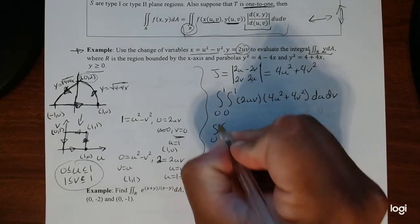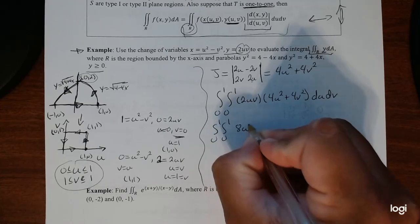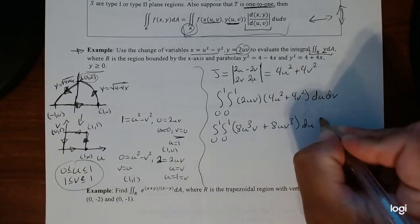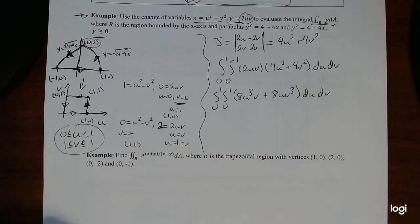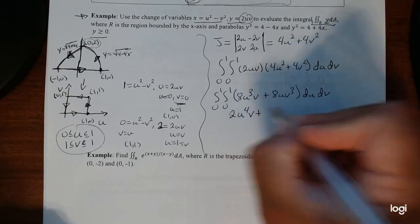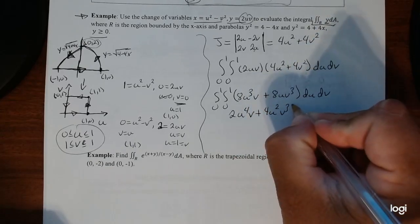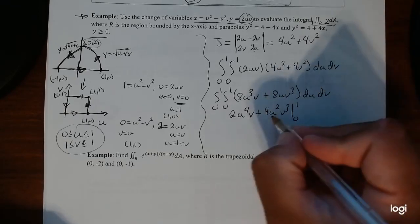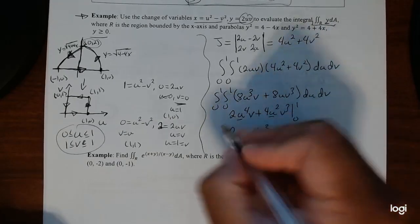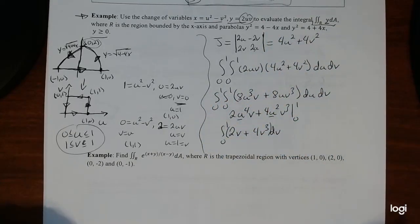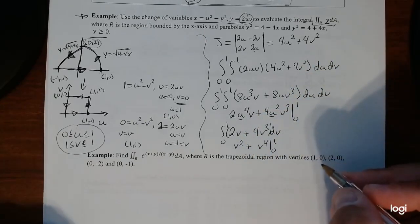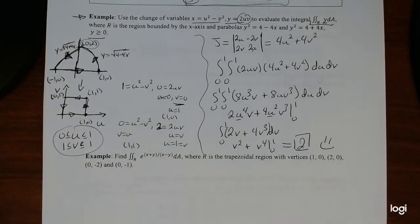So the Jacobian is 4u² plus 4v². Our integral goes from 0 to 1 and 0 to 1 — our new bounds — of y times the Jacobian du dv. Substituting y equals uv and distributing, we integrate normally. Taking the integral with respect to u, we evaluate from 0 to 1, then integrate with respect to v from 0 to 1, getting v squared plus v to the fourth evaluated at 0 and 1, which gives us 2.